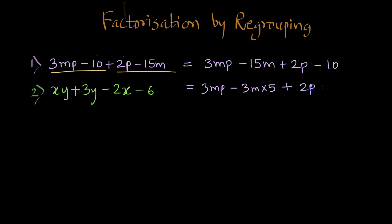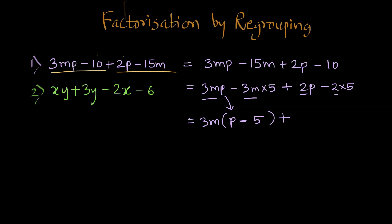I can write 2P minus 10 as 2 times P minus 2 times 5. Taking out 3M as a common factor for the first two terms, I write 3M outside the bracket and P inside, then minus 5. For the second pair, taking out 2 as a common factor, we are left with P minus 5. So we have written 3MP minus 15M plus 2P minus 10 as 3M times (P minus 5) plus 2 times (P minus 5).